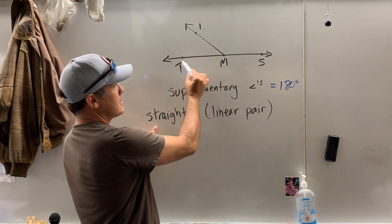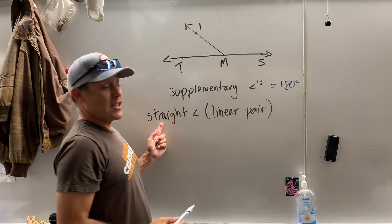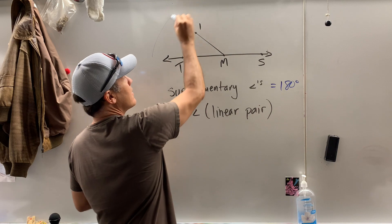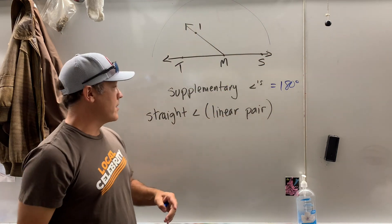Also, TS line, TS is a straight angle. It's a line. From here to here, 180 degrees. I think you already know that.